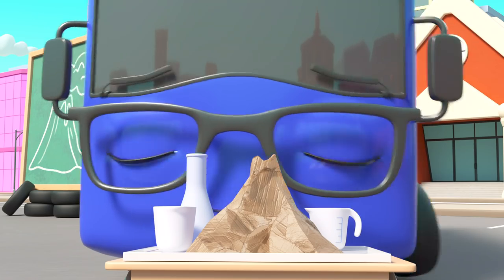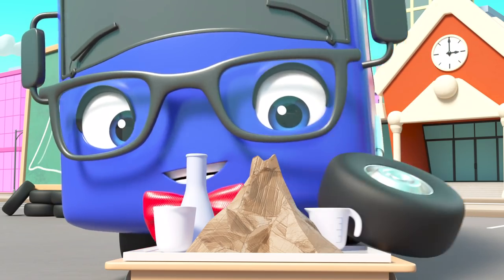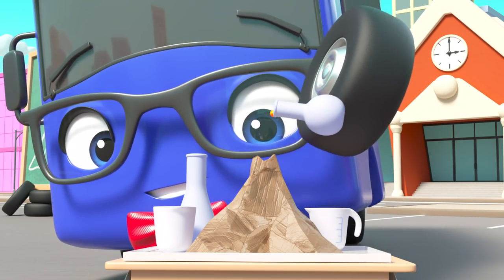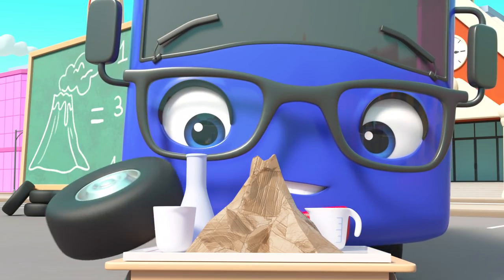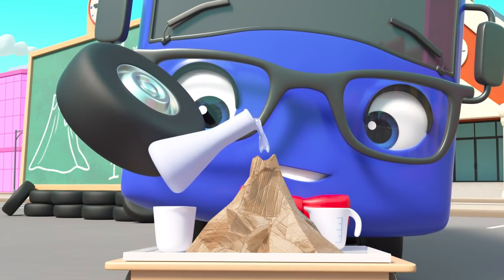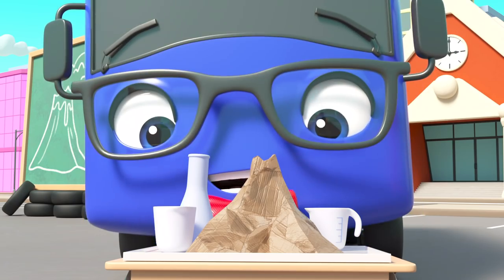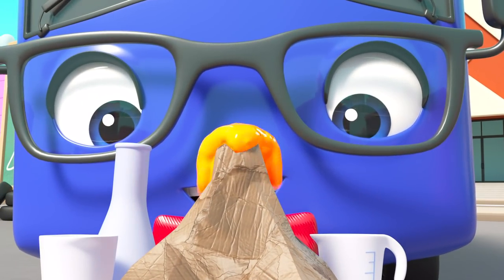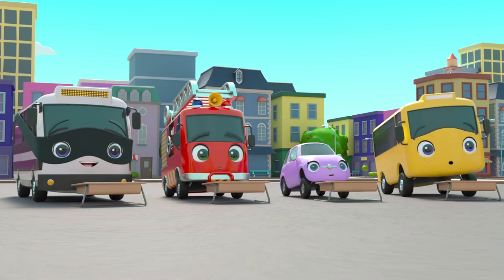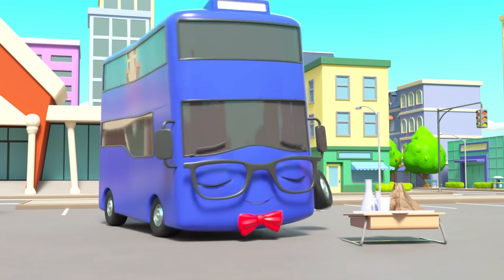The teacher is showing them what to do. First, a drop of white powder. Then three drops of food coloring. Then some vinegar to make it all bubbly. Wow! It looks like an erupting volcano! Isn't that amazing?